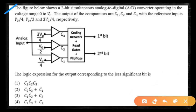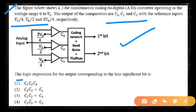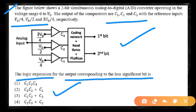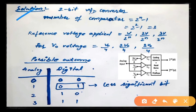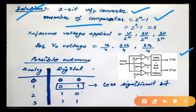Now the second problem of 3.5 marks: the figure shows a 2-bit simultaneous analog-to-digital converter operating in the voltage range 0 to V0. The outputs of the comparators are C1, C2, and C3, with reference inputs V0/4, V0/2, and 3V0/4 respectively. We need to find the logic expression for the output corresponding to the least significant bit. The number of comparators is given by 2^n − 1, where n is the number of bits.